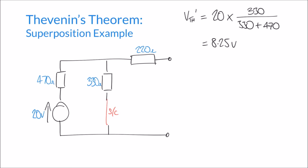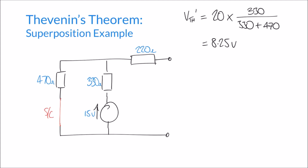Now we repeat this for the other power supply. We restore the 15-volt supply on the right-hand side and remove the 20-volt supply from the left, replacing it with a short circuit. We're going to calculate VTH'' — another open-circuit voltage across the terminals. The same reasoning about the 220Ω resistor still applies: it's an open circuit, no current flows through it, so there's no voltage across it and we can ignore it in the potential divider.